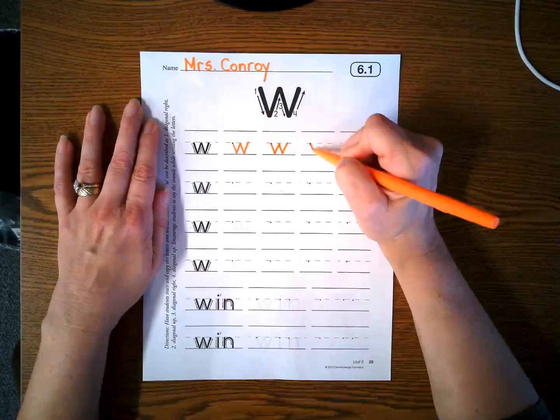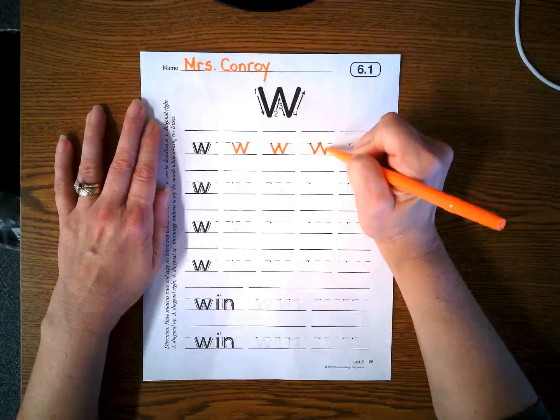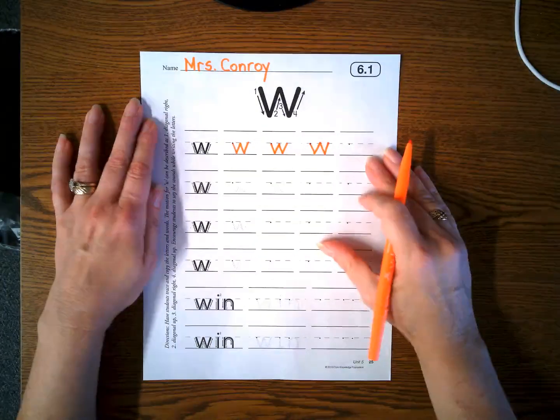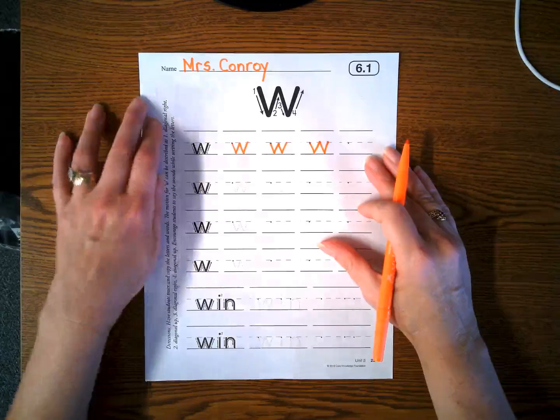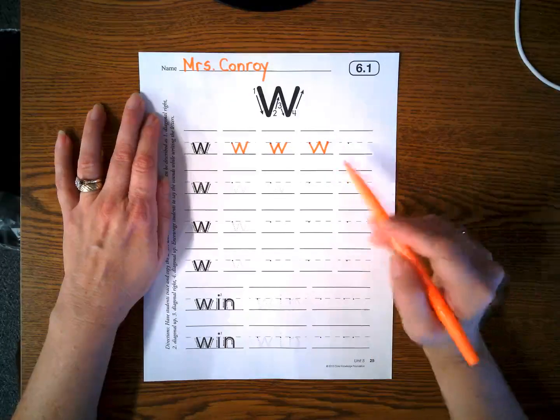Diagonal line down, up, down, and up. Please go slowly, just like I did, so that you can practice writing the lowercase w correctly.